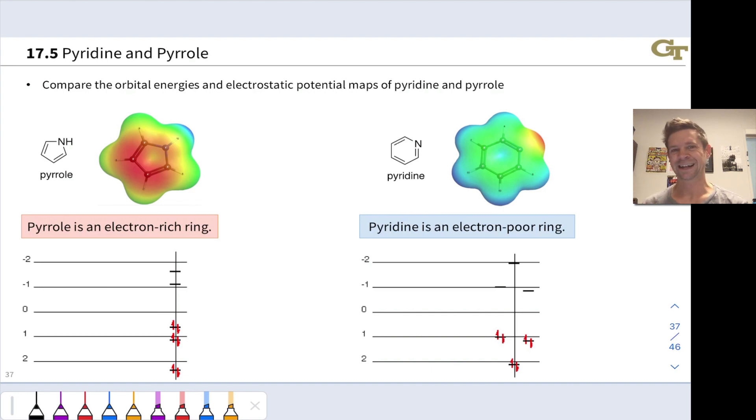Pyrrole is an electron-rich ring, and pyridine is an electron-poor ring, and these electron density maps really emphasize this. Look at all this red around the carbons of pyrrole, indicating high electron density. Meanwhile in pyridine, we're mostly green and blue around those carbons, indicating very low electron density on those carbons.